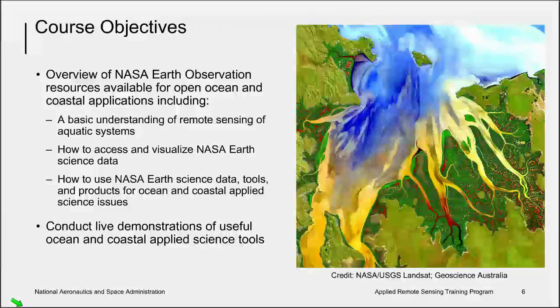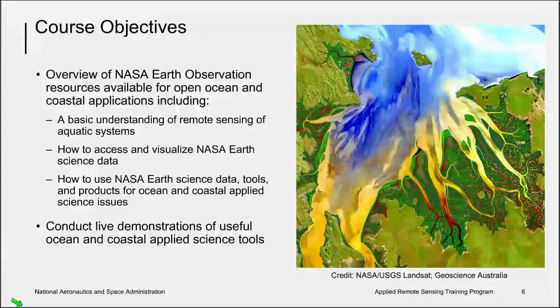So why take this course? The objective of this course is to provide an overview of NASA Earth observation resources available for open ocean and coastal applications, including a basic understanding of remote sensing of aquatic systems, how to access and visualize NASA Earth science data, and how to use NASA Earth science data tools and products for open ocean and coastal applied science issues.